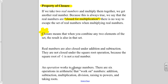So, for example, the real numbers are closed under addition and subtraction. They are not closed under the square root operation because the square root of negative 1 is not a real number. So, when we square root a real number, sometimes our answer escapes the set.